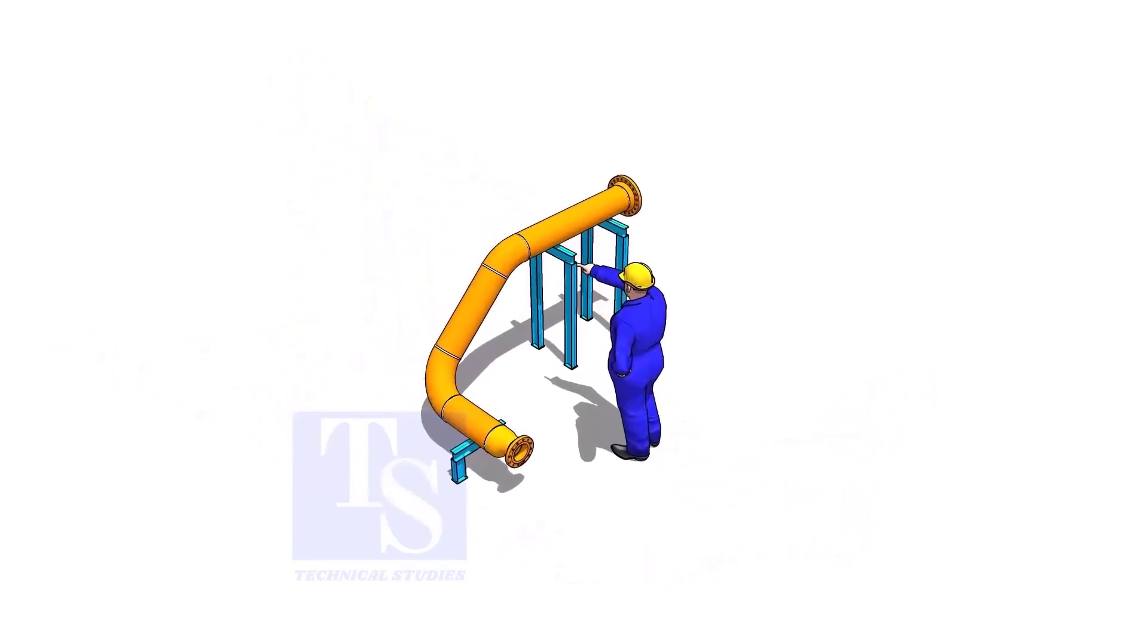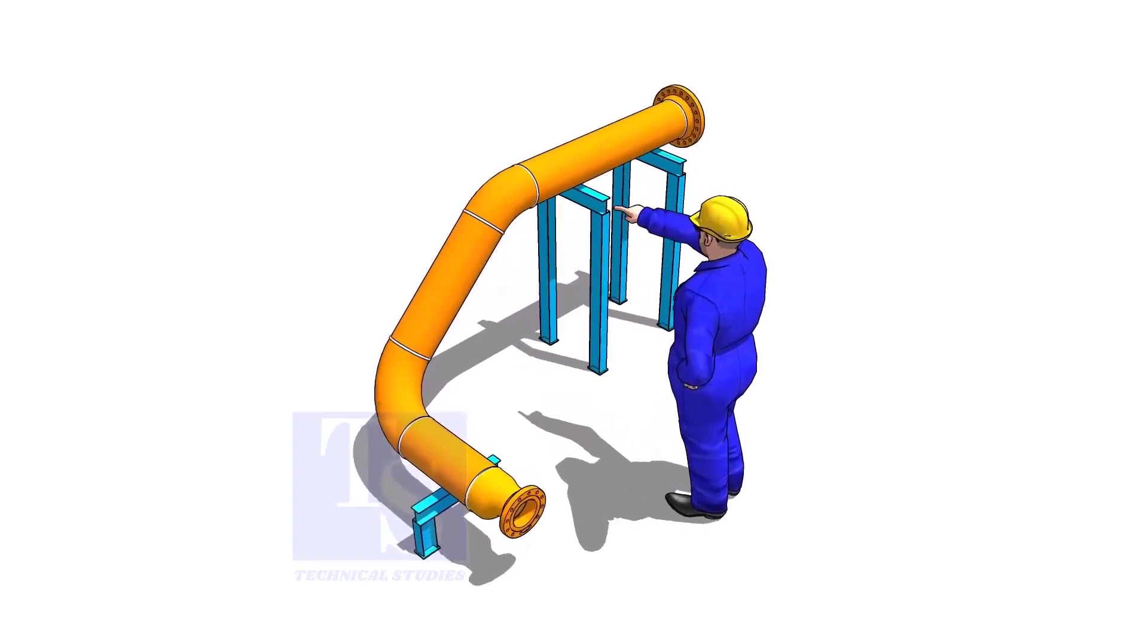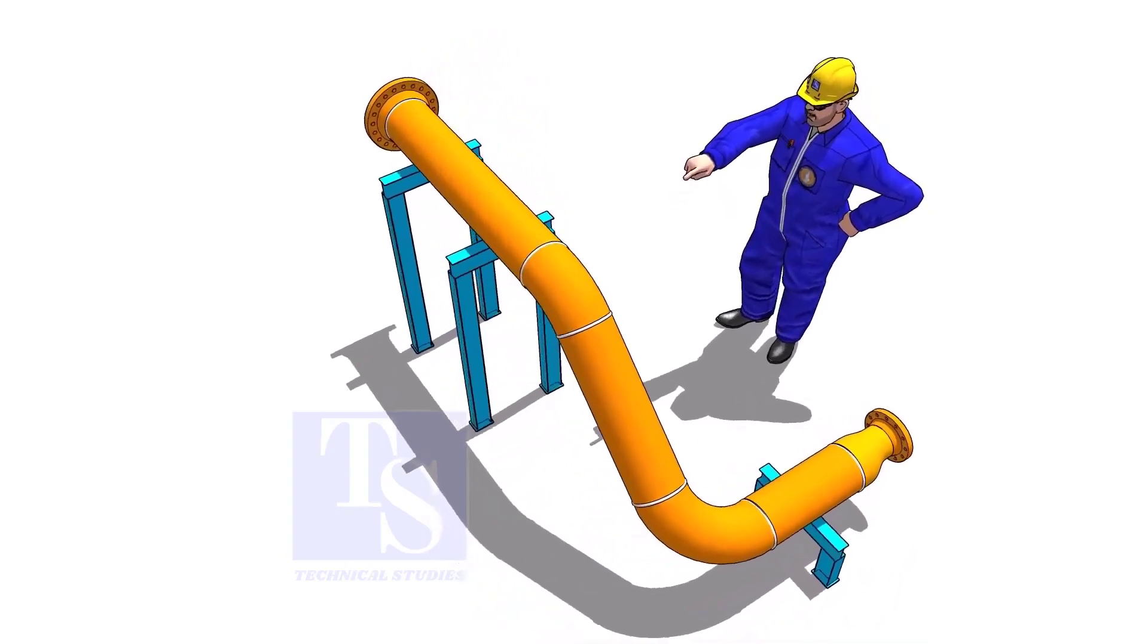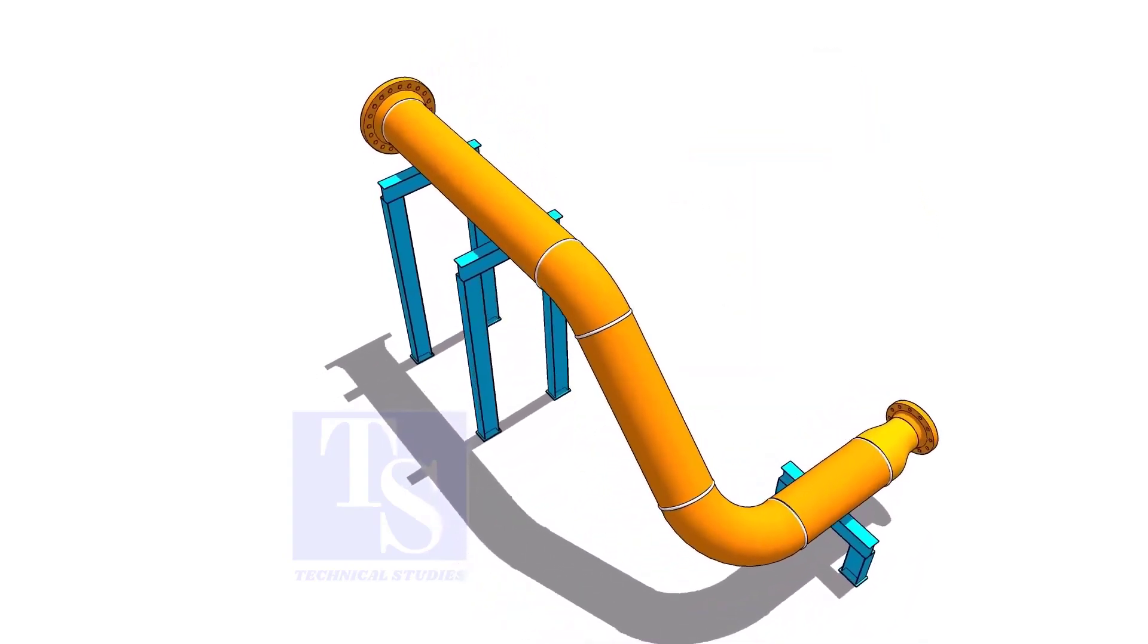Let us check the degree of the smaller elbow first. We need two pieces of large right angles for this job.